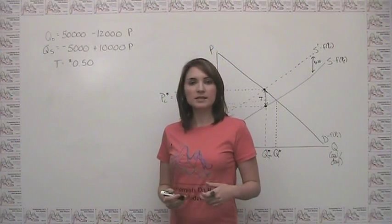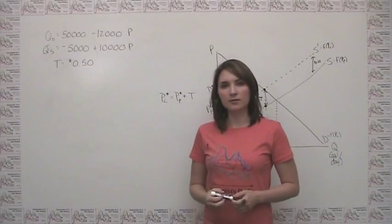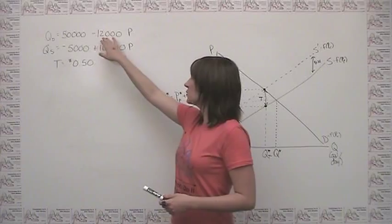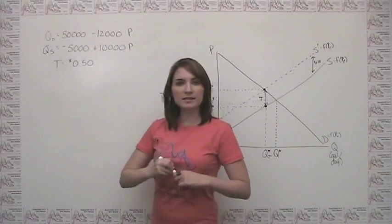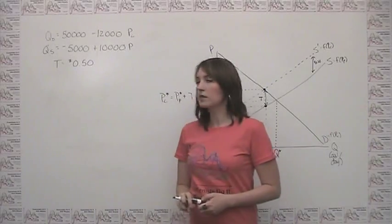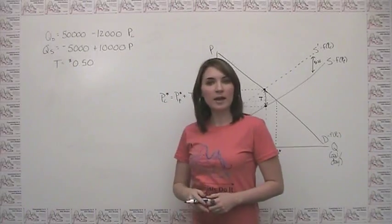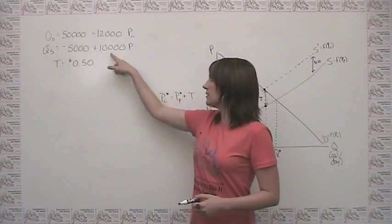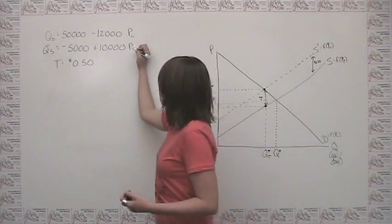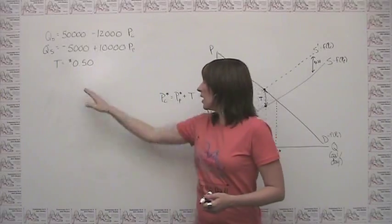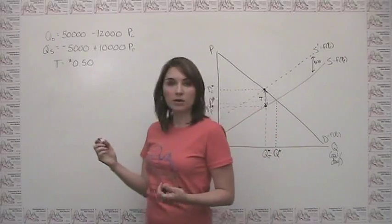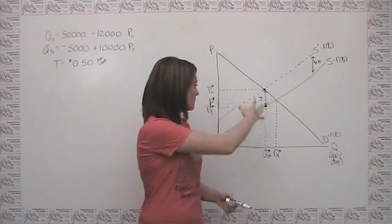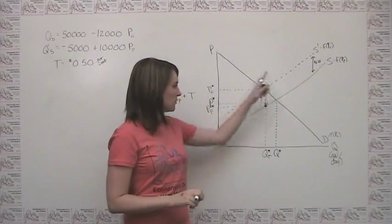Let's put some numbers to this example so that we can see algebraically how to solve quantitatively for the change in equilibrium when a tax is put in place. So let's say that we have a demand curve equal to 50,000 minus 12,000 times the price — the price that the consumer pays in total. And the supply curve is equal to negative 5,000 plus 10,000 times the producer's price, net of the tax. The tax is 50 cents per unit. We can think about how these match up to what we've drawn here and how to solve for these different quantities.